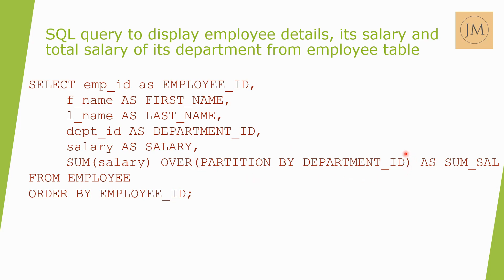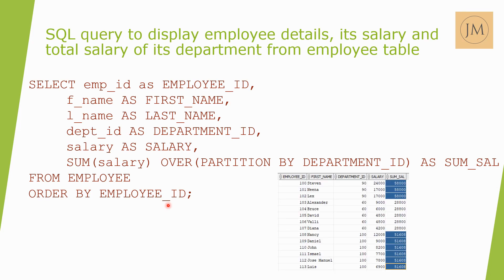For department_id 10, the SUM function is applied on department 10, then department 20, and so on — extending the records department-wise. The query is FROM employee ORDER BY employee_id. For example, employee_id 100 (Stephen), department_id 90, salary 24,000, total sum 58,000 — because there are three records under the same department.